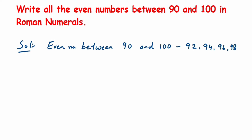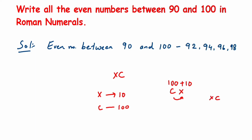First, how do we write 90? We know that C represents 100. When you write XC, X is placed in front of C. X represents 10 and C represents 100. If you write CX, you're adding them: 100 plus 10 equals 110. But if you write XC, you're subtracting: 100 minus 10 equals 90. So 90 is written as XC.